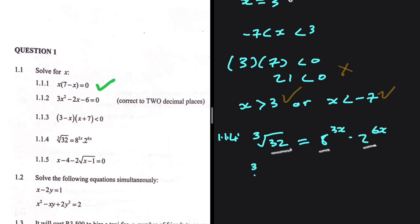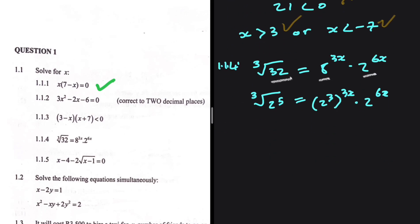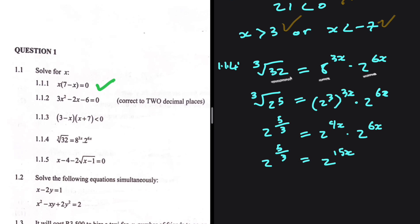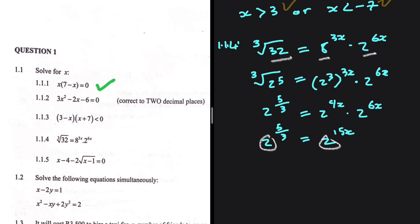Here we're going to have the cube root of 2 to the power 5, since 32 is 2 to the power 5, equals 2 — instead of 8, we have 2 to the power 3 — multiplied by 2 to the power 6x. So on the left-hand side we have 2 to the power 5 over 3, equals 2 to the power 3 times 3x, that is 9x, multiplied by 2 to the power 6x. Same base, so we add the exponents: 9x plus 6x is 15x.